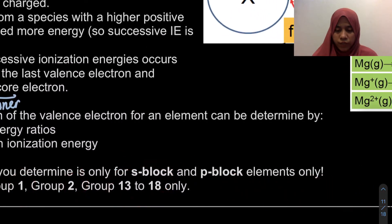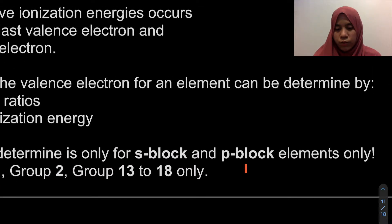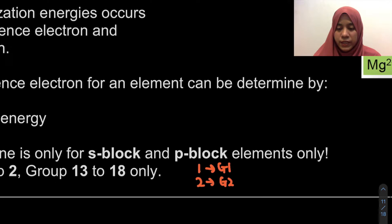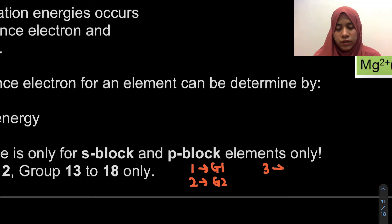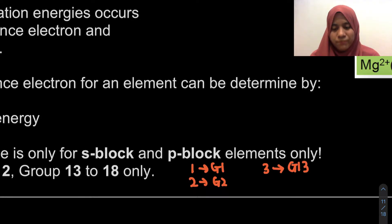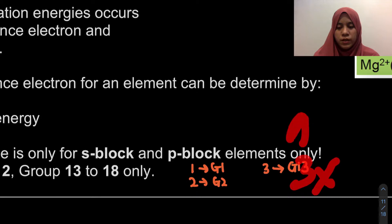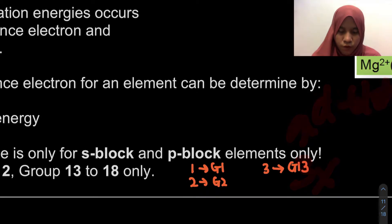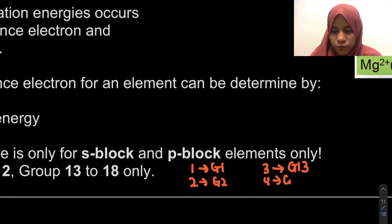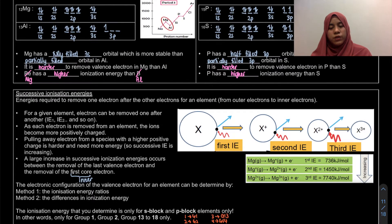For example, if the valence electron count is 1, it's group 1. If it's 2, it's group 2. But it's slightly different for P-block. If the valence electron count is 3, the group is not group 3 but group 13. Group 3 is actually our D-block. So if you get 4 valence electrons, it means it's from group 14. Let's look at the calculation.